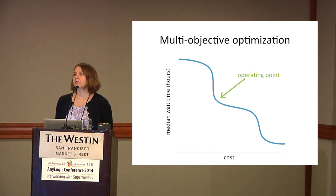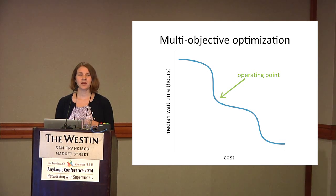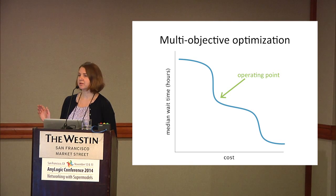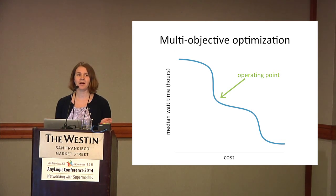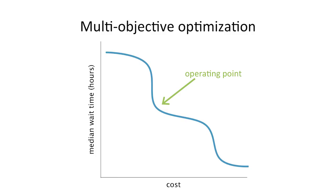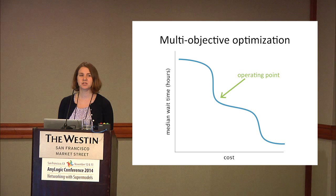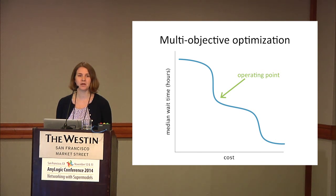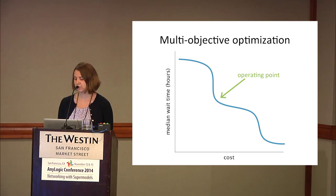Simulation optimization alone is extremely useful, but you really gain a lot from asking deeper questions with multiple objectives. Usually you want to minimize costs and maximize performance — these are pretty much always competing objectives. By building out a tradeoff curve with the help of automated simulation optimization runs, you can get a much deeper understanding of your underlying simulation models and the tradeoffs, allowing decision makers to make much more informed decisions.